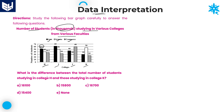Look at the first question: What is the difference between the total number of students studying in college H and those studying in college K? We need to calculate the difference between the total students in college H and total students in college K. First I will take college H, then college K, and find the difference between these two.